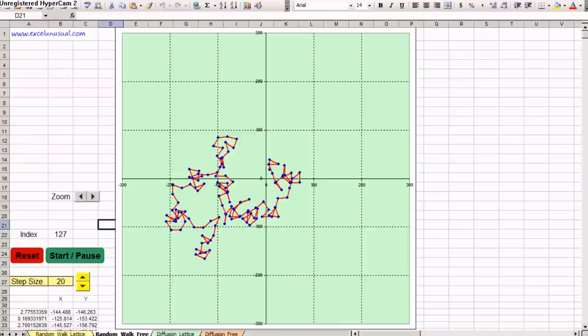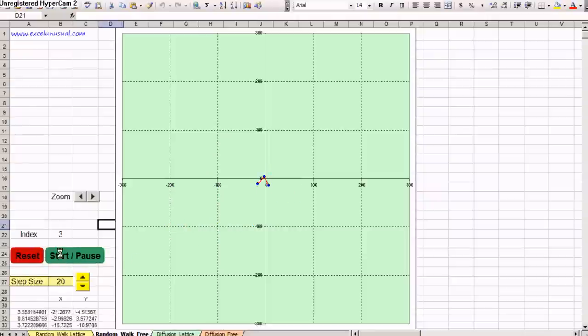This is a random walk free motion, which means the particle this time will be able to start near the origin but while moving a constant step, it will move with equal probability in any direction between 0 to 360 degrees. Let's reset this and start it and we can see the particle moving around.